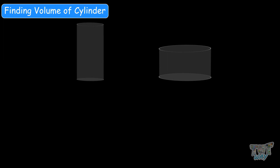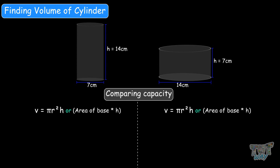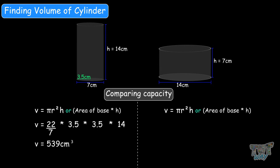Now here we have two containers, both of right cylindrical shape. One has a diameter of 7 centimeters and height of 14 centimeters; the other has a diameter of 14 centimeters and height of 7 centimeters. We have to compare which container has greater capacity and volume. The formula is π r squared h. For the first container — radius is 3.5 cm, height 14 cm — it is 22/7 times 3.5 times 3.5 times 14, giving 539 centimeters cubed.